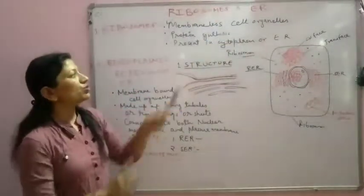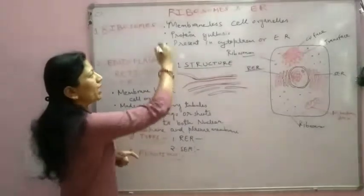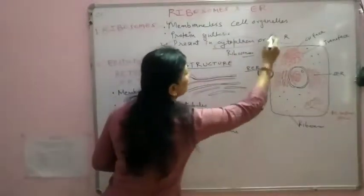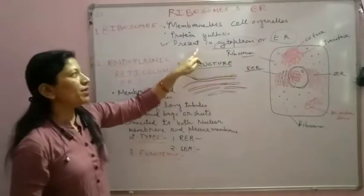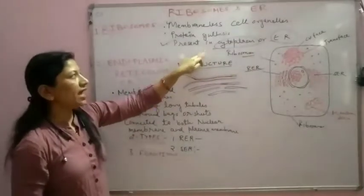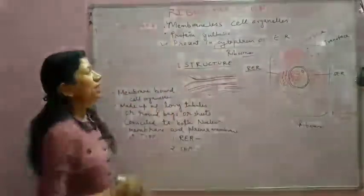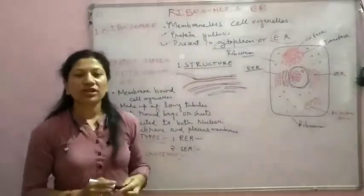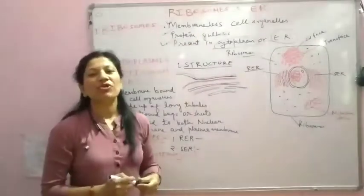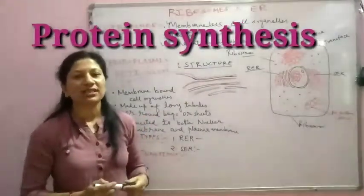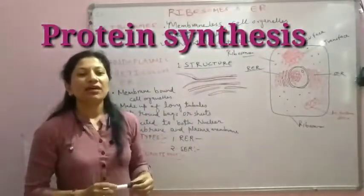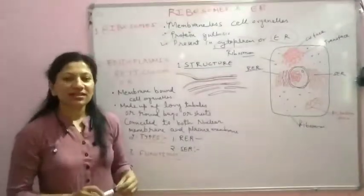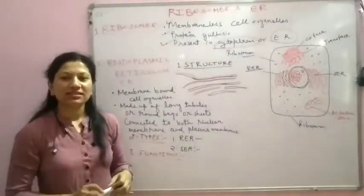So it is clear that ribosomes are membrane-less cell organelles. They are present in the cytoplasm and attached to the surface of the endoplasmic reticulum. Now, the third point: the main function of ribosomes in the cell is protein synthesis. Ribosomes help in protein synthesis in the cell.